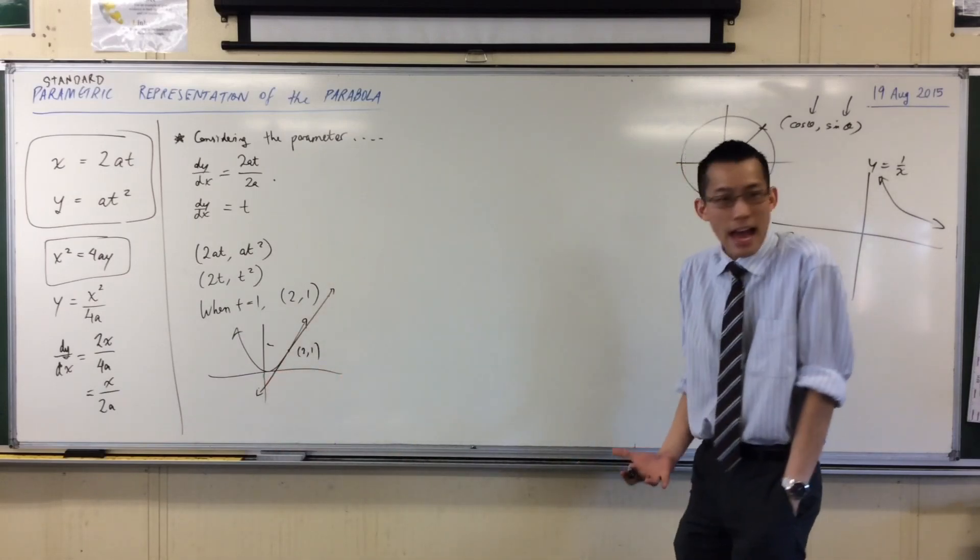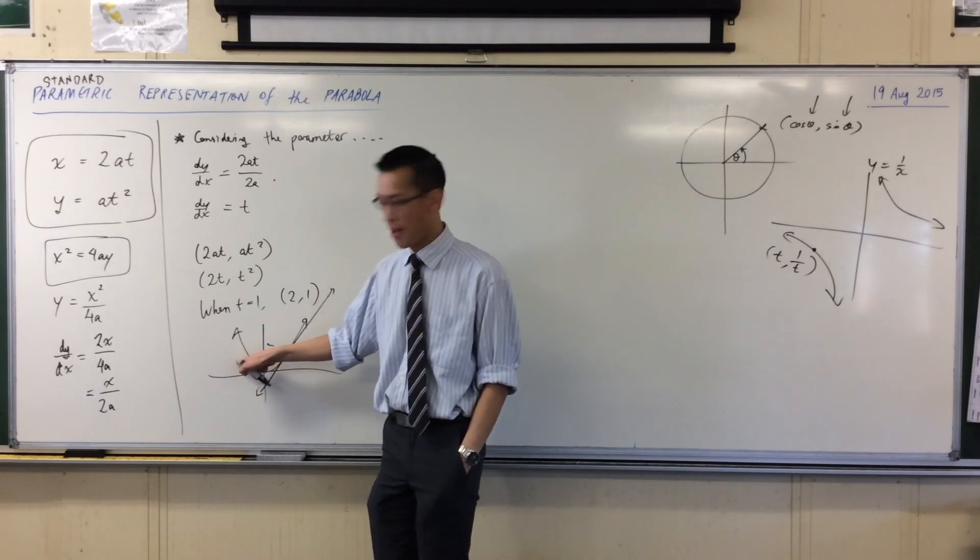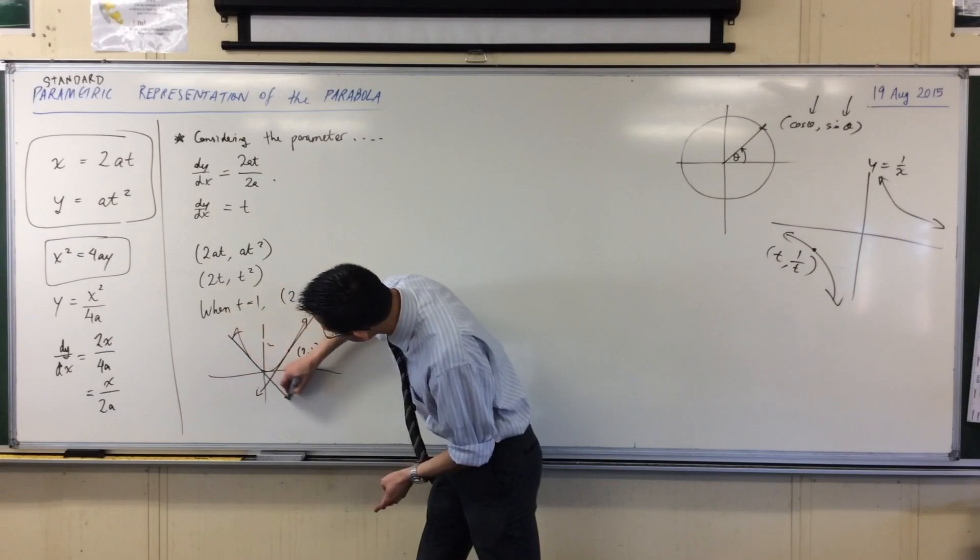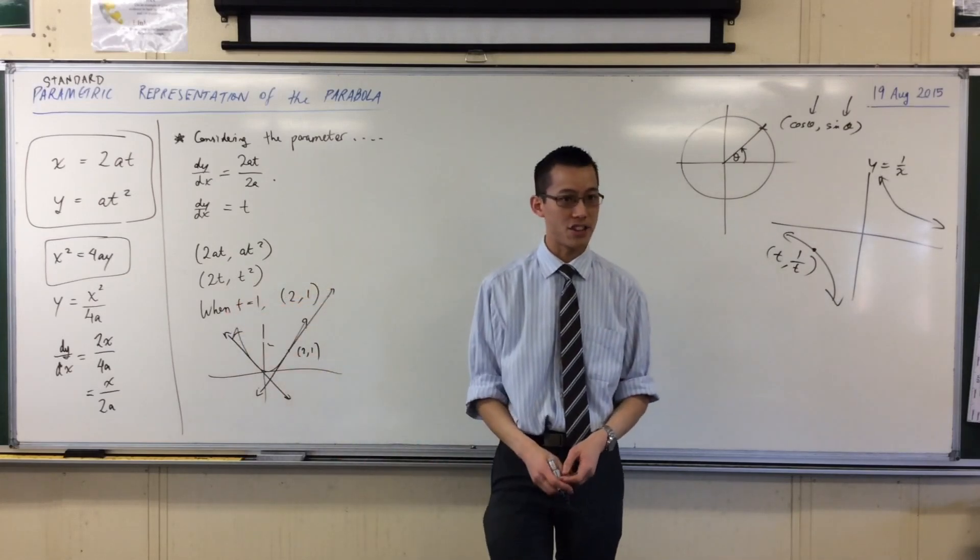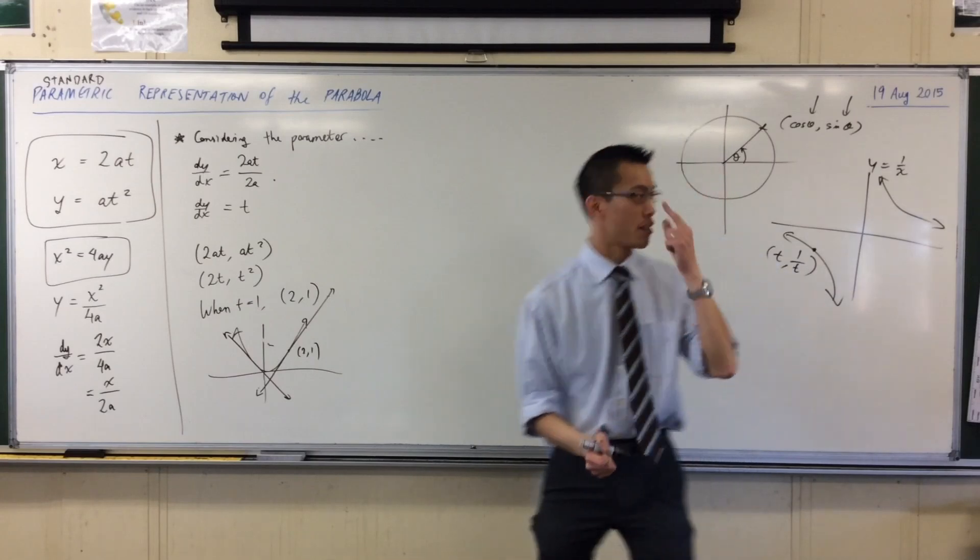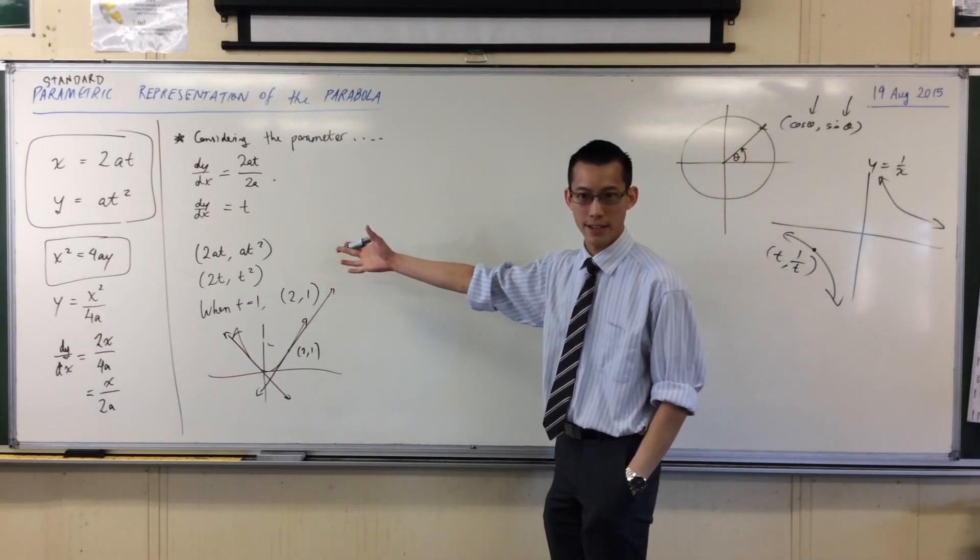What if I said, how about t equals negative 1? I'm going to be on the opposite side. I'm going to be wherever I need to be on the parabola, such that the gradient of the tangent will be negative 1. Now, that's what the parameter is. The parameter can be an angle. In this case, it's a derivative. It's the gradient.